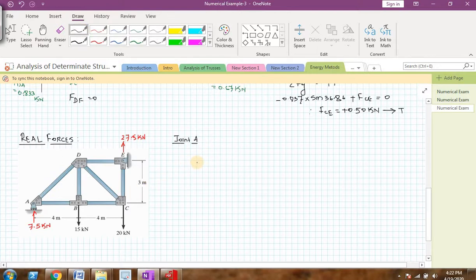Now, I will take joint A and draw the free body diagram. I have drawn the free body diagram of joint A. I am assuming some forces in member AB and AD. AB, I am assuming it as a tensile force and AD, I am assuming it as a compressive force. The angle is 36.86 and this is the reaction of A, support A.